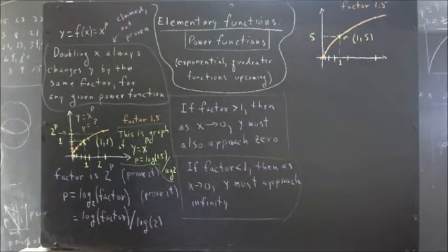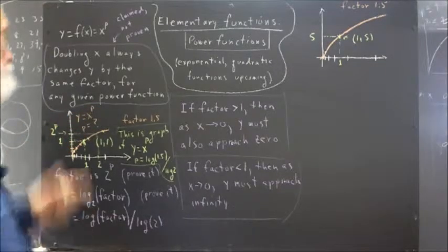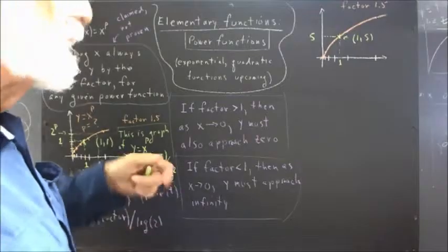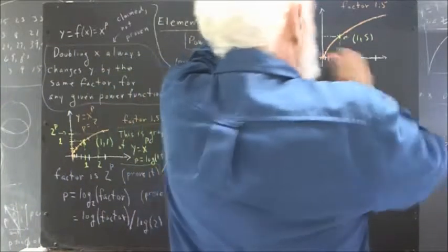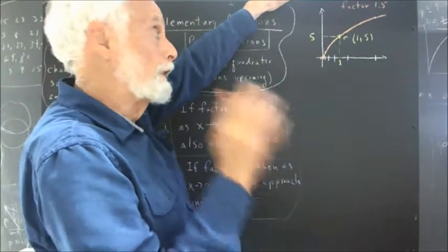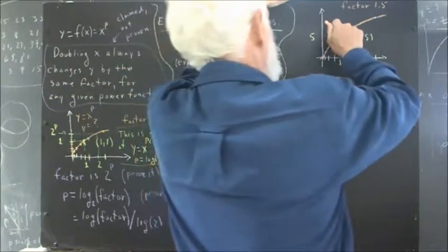Clearly, this is no longer the graph of y equals x to the p because 1 to the p is 1, not 5. Now, however, it turns out, and you can prove this, and it's perfectly plausible to say this. There's no big surprise. Once I say this, you'll pretty much believe that it's true.